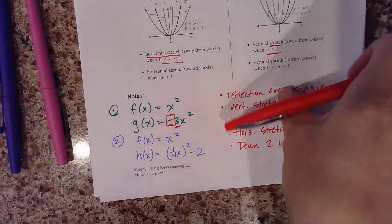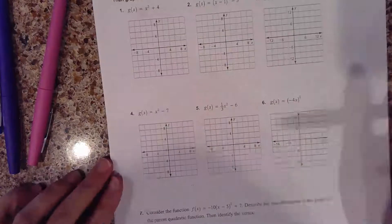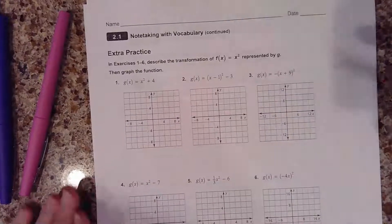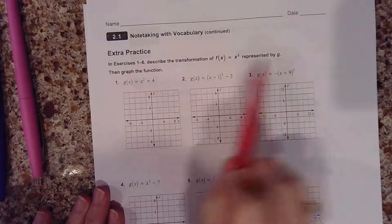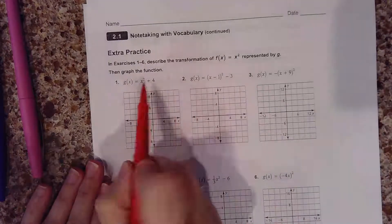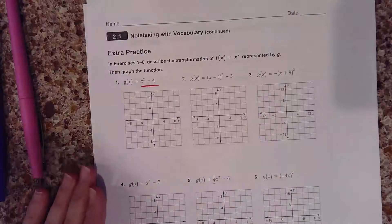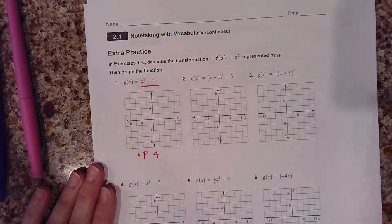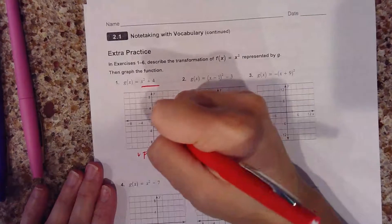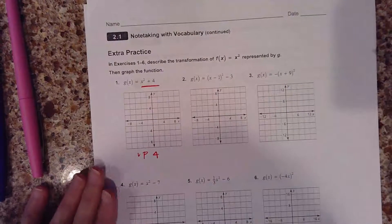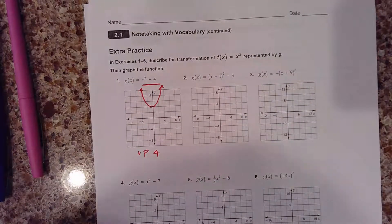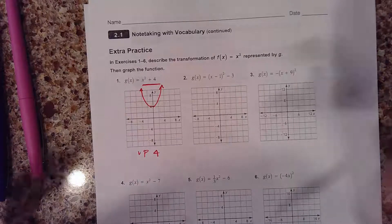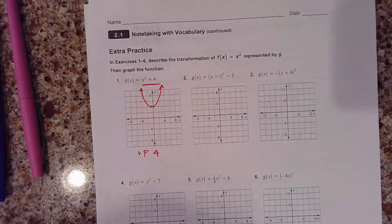Let's do some practice on page 28. When I ask you to graph the function, I just want you to sketch it and describe the transformations. The first one is an up four — a translation moving four units up. Your normal parent function has a vertex at zero, zero, so this function just moves up four. I didn't sketch every single point, but we're just looking for a sketch here.